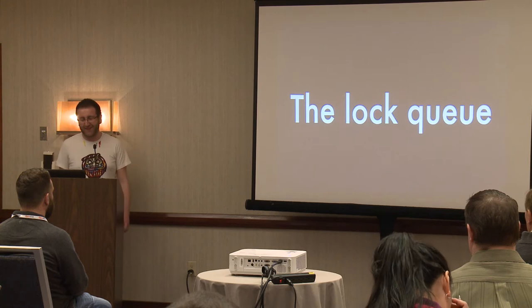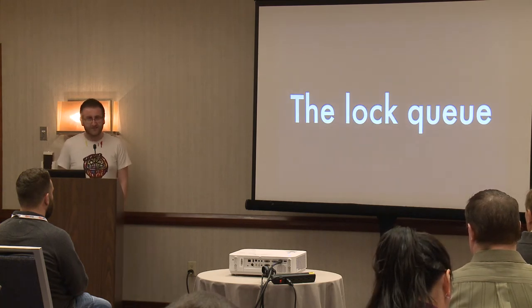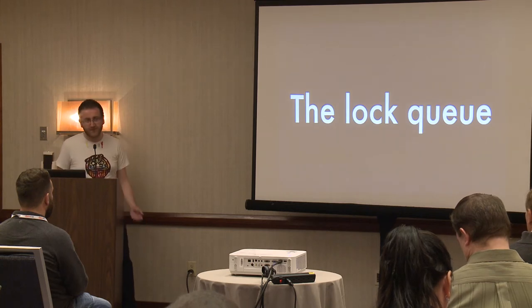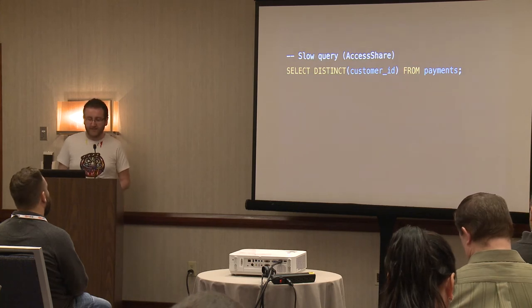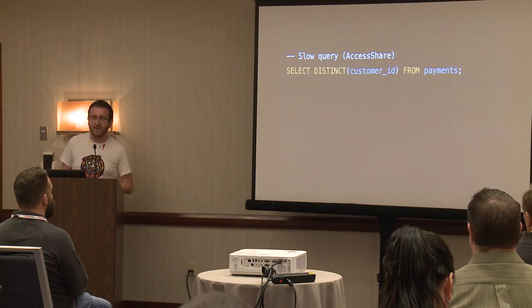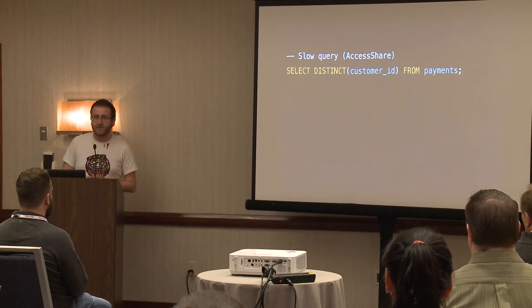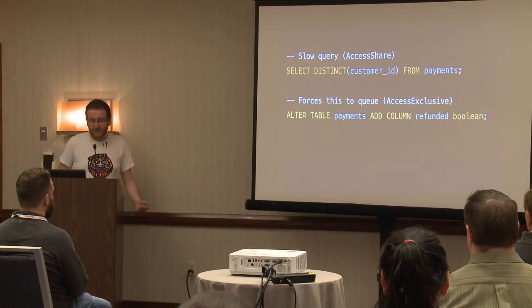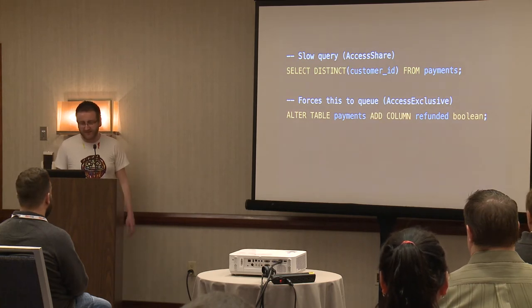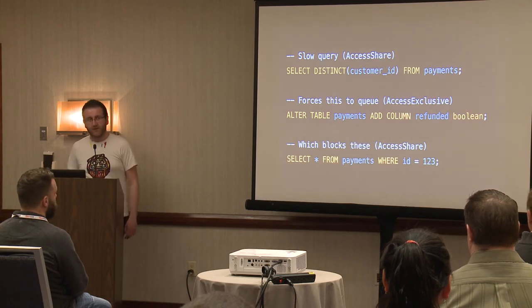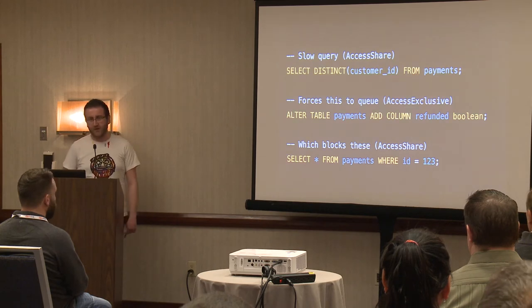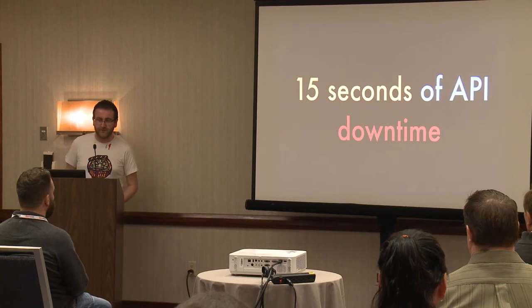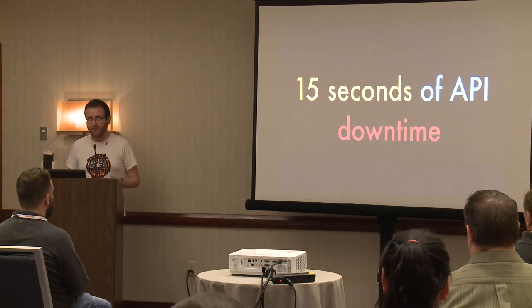Well, locks can get queued if they can't be acquired. When a lock can't be granted, the query enters a queue to acquire that lock, and anything that would conflict with that lock will queue up behind it. Say we have a SELECT DISTINCT customers query — run-of-the-mill analytics to see how many customers you have. You then deploy your new feature — refunds — but it has to wait behind that analysis query, which is taking a while. What that means is your regular API queries, such as viewing a single payment, no longer work — they queue up behind the thing trying to grab the exclusive lock. Your API is down. In this case, we had a total outage of about 15 seconds where critical parts of our API were no longer available.